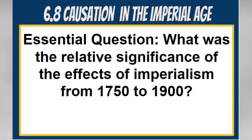AP World History Topic 6.8: Causation in the Imperial Age. Essential question: what was the relative significance of the effects of imperialism from 1750 to 1900? Imperialism from 1750 to 1900 was intricately linked to the economic dynamics of the time, primarily stemming from the surge in industrial capitalism. This video explores the key effects of imperialism with a focus on overseas expansion and the strategic control of resources.